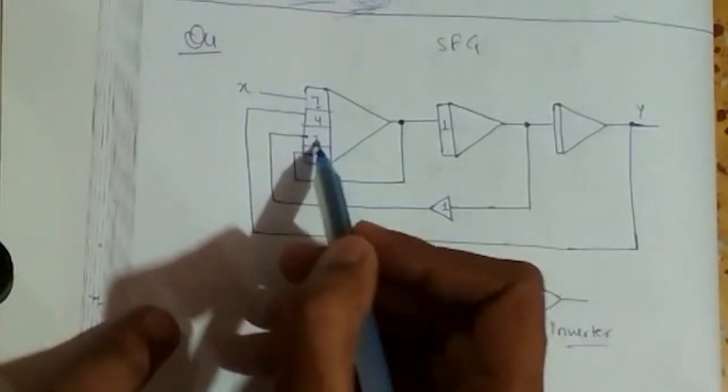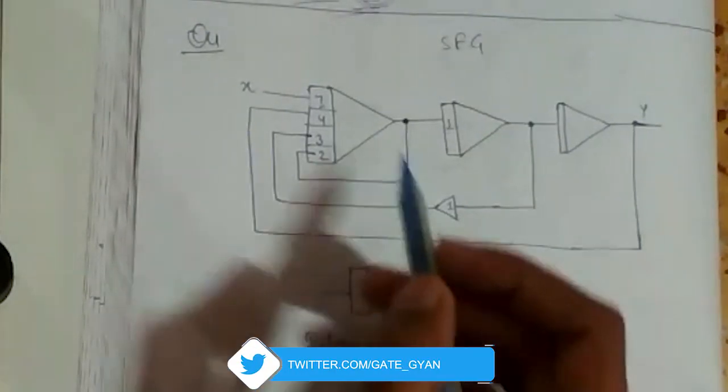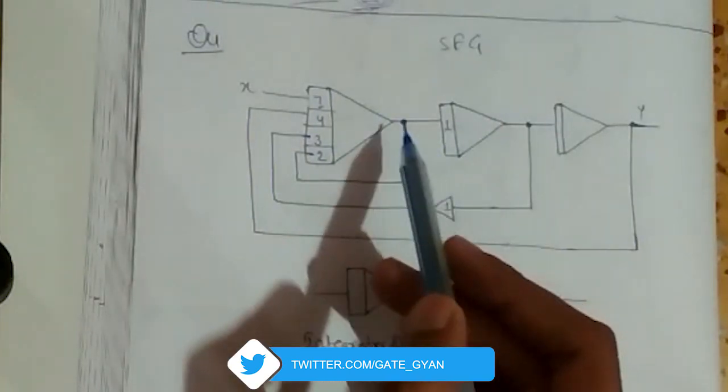These are the gains which are constants getting multiplied with this whole system or this inverter circuit.